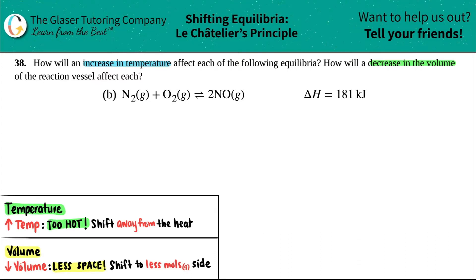So the first thing I'm going to do is just rewrite this a little bit bigger just so that we can work with it better. So I have N2 gas plus O2 gas, and this comes to equilibrium with 2 NO gas.